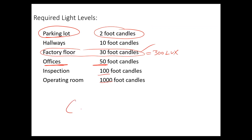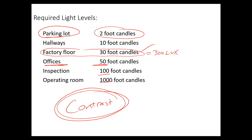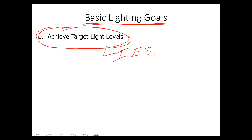What's really important is the contrast. If you're reading with light behind you, it's a lot easier because you don't have the glare factor. Headlights on cars are the same brightness whether it's day or night, but the contrast is better at night. The contrast is really important, but you still have to meet these required light levels — that's what we mean by achieving the target light levels.